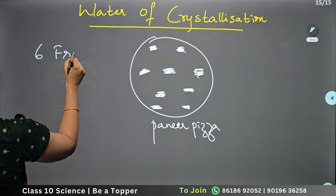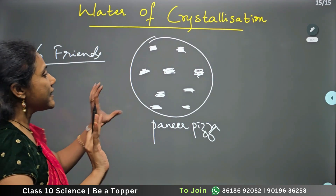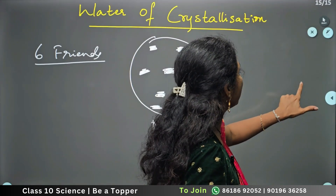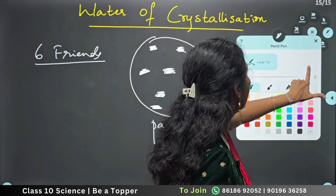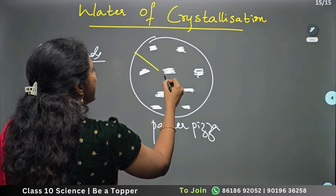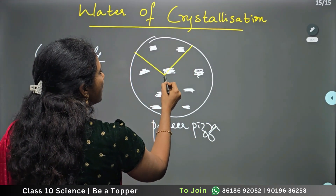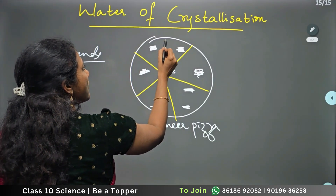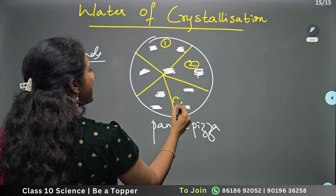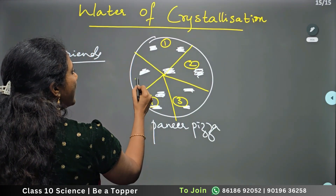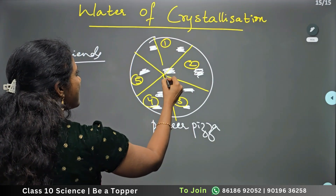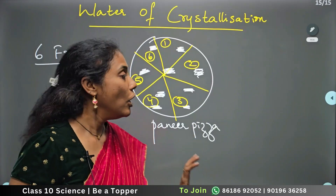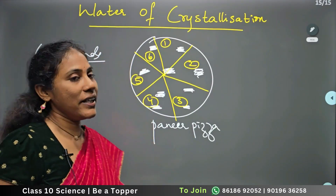There are six friends who have to eat this pizza. So what do I do? I make six pieces. Piece number one, piece number two, piece number three, four, five, six. So six members are sharing this pizza by cutting it this way.